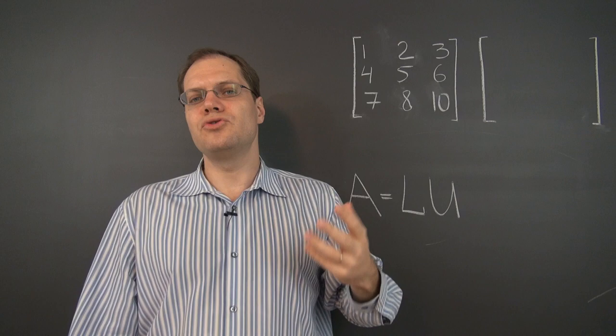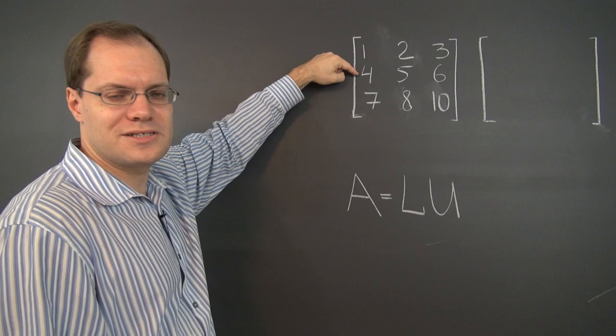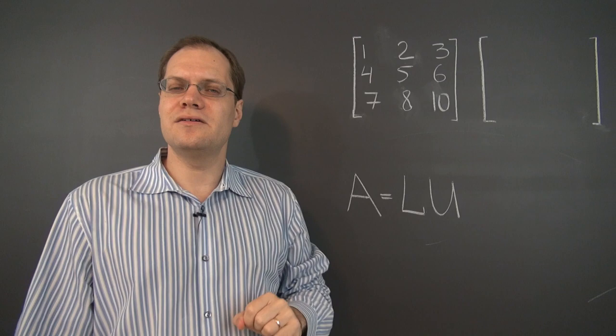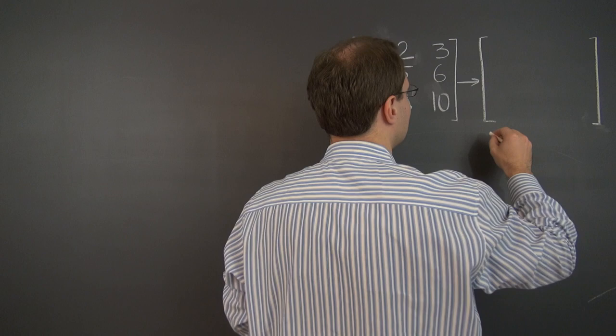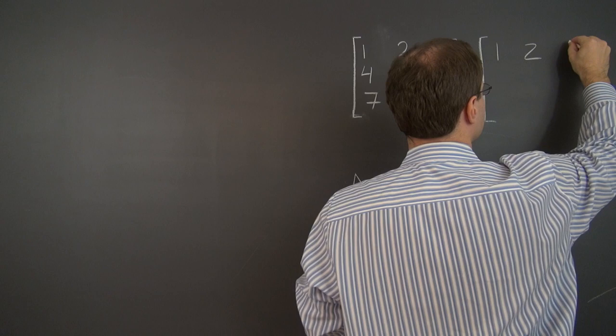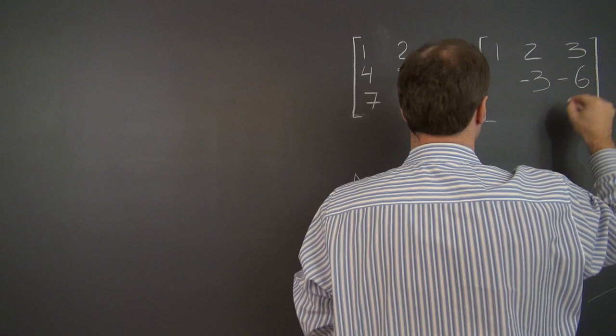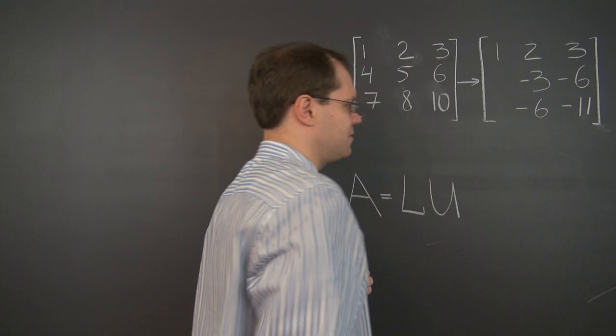Let's start with a matrix and perform the first two combined steps of Gaussian elimination, which is to subtract four of the first row from the second and seven of the first row from the third, thus eliminating this four and seven. You're well familiar with these two steps, so let me do them rather quickly. So this matrix goes to: 1, 2, 3; 0, negative 3, negative 6; and finally negative 6, 0, negative 6, negative 11.